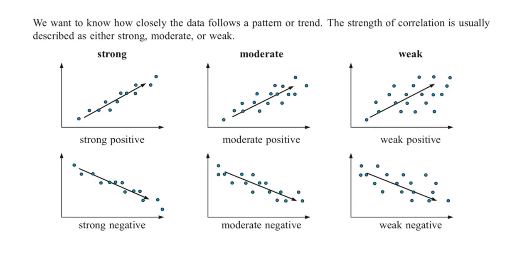In one of the previous videos, we took a look at scatter diagrams, and here you can see six of them. We should know our words by now: strong, moderate, and weak, and then positive and negative, right?